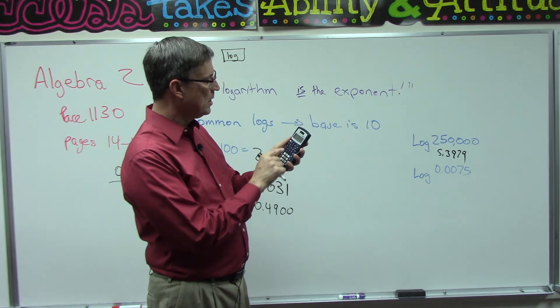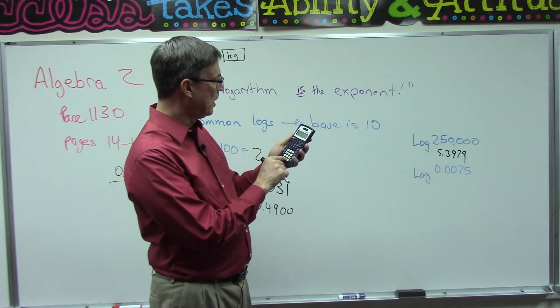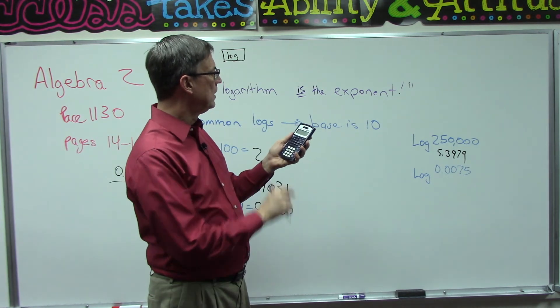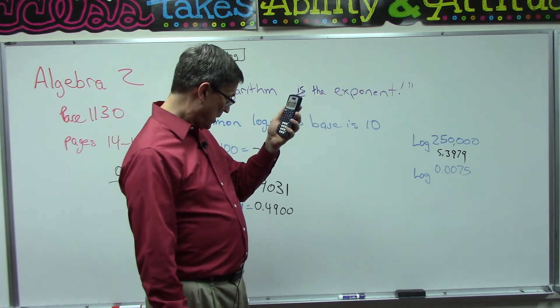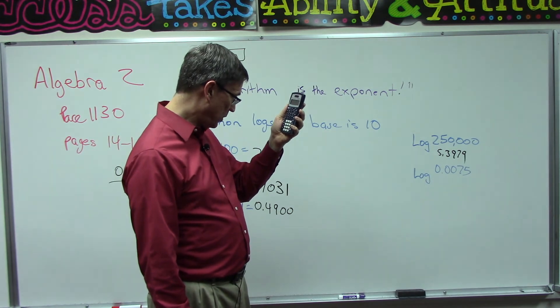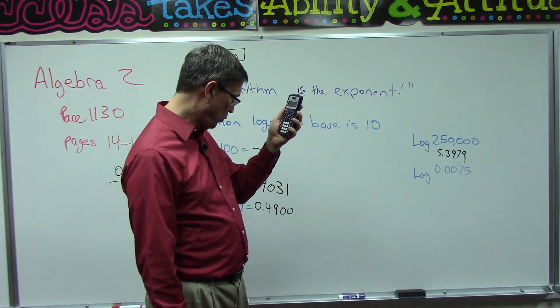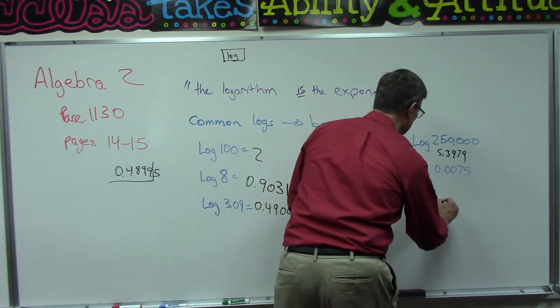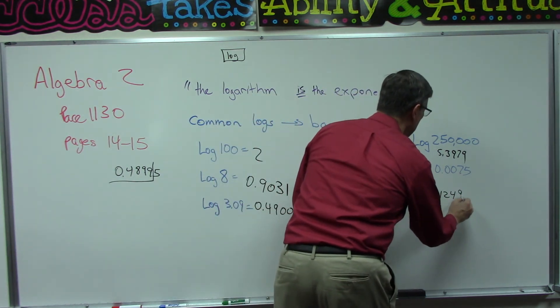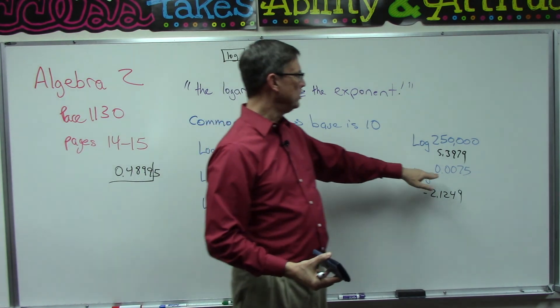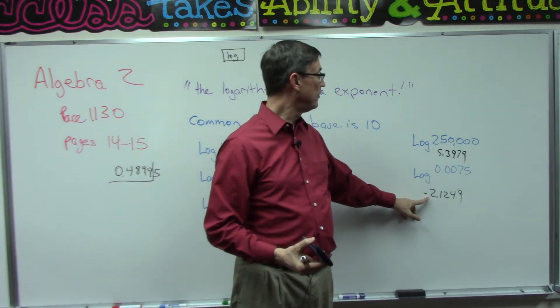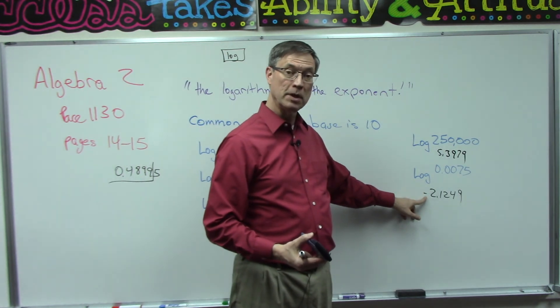All right, now we try the log of a decimal number, 0.0075. Hit enter and I get a negative number, -2.1249.